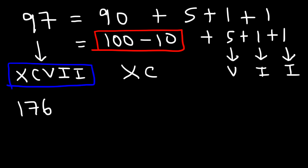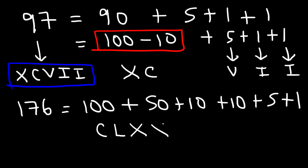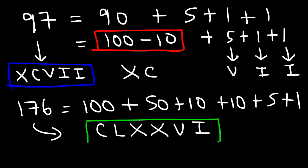For 176: 100 plus 50 plus 10 plus 10 plus 5 plus 1. All numbers are in descending order, so we just write them out. 100 is C, 50 is L, 10 is X, another 10 is X, and then VI. So 176 is CLXXVI.